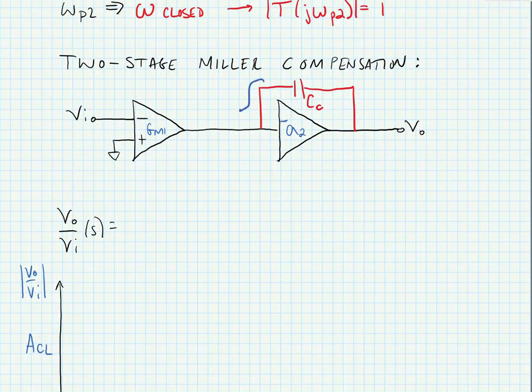Now the current ix that flows through the compensation capacitor is equal to big gm of that first stage times the input voltage, and our output voltage v out is equal to ix times the impedance of the capacitor which is one over s c times c.